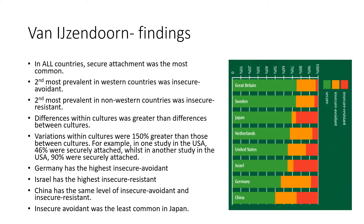For example, in the USA where 15 studies were conducted, one found 46 percent securely attached while another found 90 percent securely attached. Some key findings worth remembering for multiple-choice questions: Germany has the highest insecure avoidant attachment; Israel has the highest insecure resistant; China has equal levels of insecure avoidant and insecure resistant; and insecure avoidant was the least common in Japan — all visible on the graph.